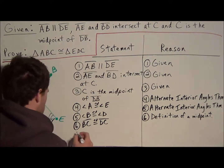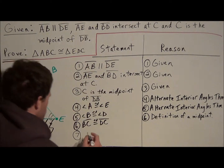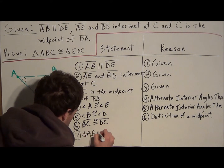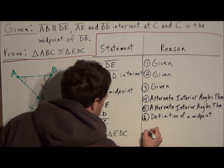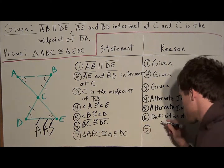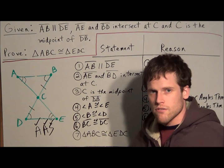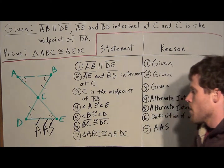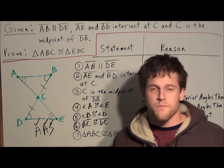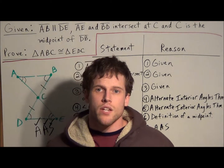We've established a pair of congruent angles, a second pair of congruent angles, and a pair of congruent sides. With all proofs, the last statement is what you're trying to prove: triangle ABC is congruent to triangle EDC. The reason is the angle angle side postulate — AAS. If two triangles share two pairs of congruent angles and a pair of congruent sides not located between those angles, the triangles are congruent. That concludes this video on triangle proofs with the angle angle side postulate.